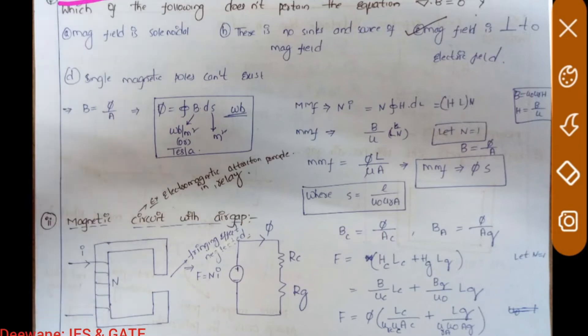The basic equation you know is B = phi/A. Also, phi equals the double integration of B·ds, where the unit of B is Weber per meter squared and ds is in meters, so the unit of phi is Webers.